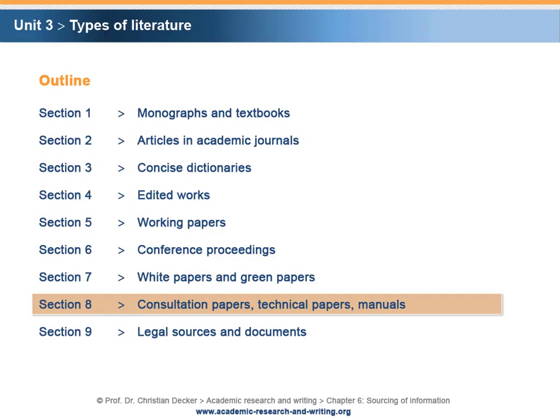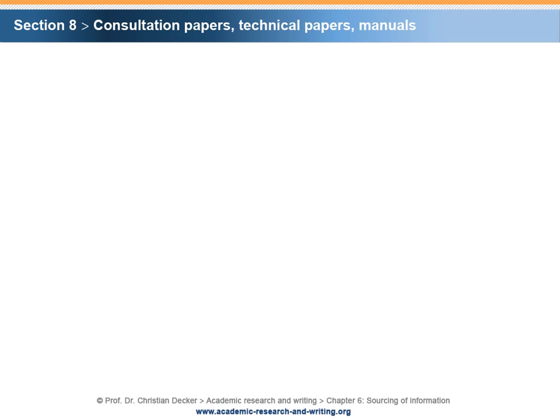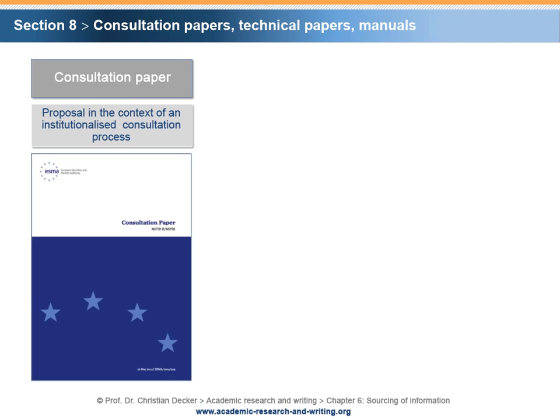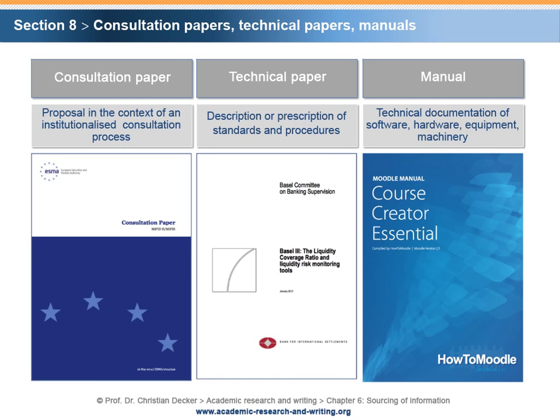Section 8: Consultation Papers, Technical Papers, Manuals. Other types of literature applied in academic research are consultation papers, technical papers and manuals. Similar to a white paper or a green paper, a consultation paper states a proposal by an institution or a government. The major purpose of a consultation paper is to announce intended policy action in order to receive feedback from interested parties via an institutionalized consultation process. A technical paper is issued by a governmental or supranational institution; it describes and/or prescribes technical standards and procedures to be applied in a given field, and in many cases has a legal or quasi-legal character. A manual, also referred to as a user guide, is a technical documentation of software, hardware or other technical equipment and machinery.